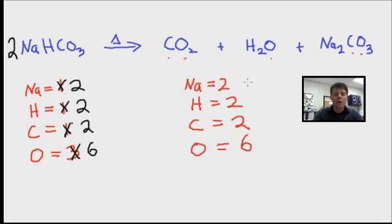At this point we've now written a balanced chemical equation. We can check off that the sodium numbers are the same, hydrogen, carbon and oxygen. All these values are checking out to be the same. So we at this point have a balanced chemical equation.